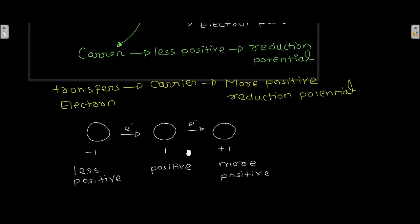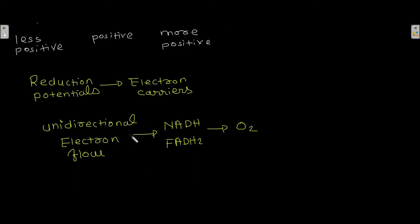Electron flow goes from less positive reduction potential to more positive reduction potential. Thus the reduction potentials of the electron carriers favor unidirectional electron flow from NADH and FADH2 to oxygen.